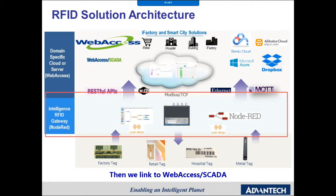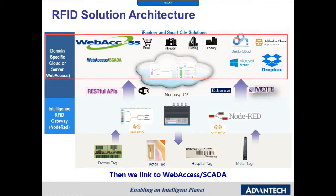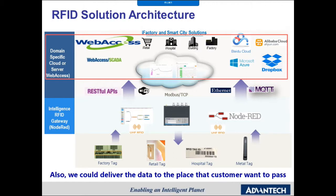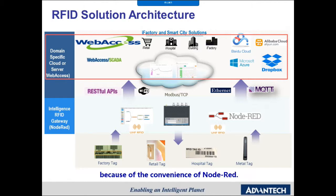We link to WebAccess SCADA, making it easy to monitor the filtered data you want. We can also deliver data to wherever customers prefer, such as Baidu, Alibaba Cloud, Azure, or Dropbox — all made convenient through Node-RED.